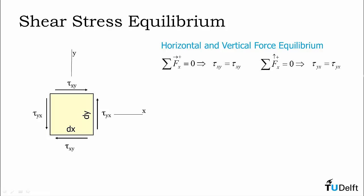If you sum the forces in the horizontal direction, we find that the shear stress tau xy at the top side of the element must equal tau xy at the bottom side of the element, and similarly for vertical force equilibrium, tau yx at the right side of the element has to equal tau yx at the left side of the element.